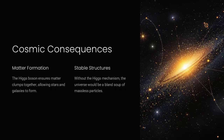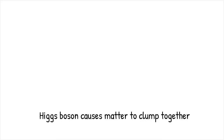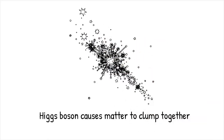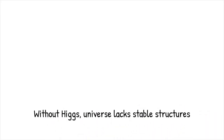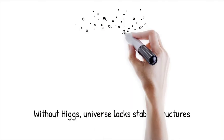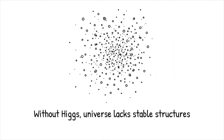The Higgs boson's existence ensures that matter clumps together rather than flying apart at light speed. This clumping allowed stars and galaxies to form. In these stars, nuclear reactions create heavier elements, which later become part of planets and eventually part of life. Without the Higgs mechanism, the universe would be a bland soup of massless particles zipping around, never combining to form anything stable or complex. Understanding the Higgs boson helps us appreciate how delicate and finely tuned our universe is, and how fundamental science underpins the very existence of structures and life.